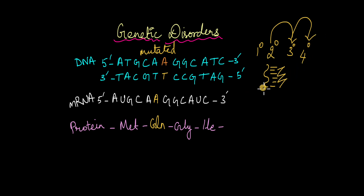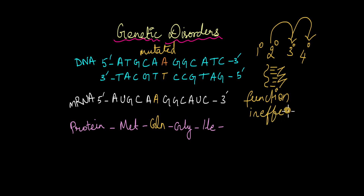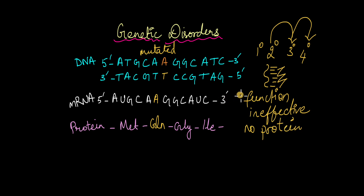If the structure of the protein is affected, it means that the function is ultimately affected. Some mutations can also cause protein translation to stop prematurely, which means that an ineffective protein is being produced — the protein is not fully long enough to function properly. Sometimes no protein can be produced because of such mutations. And ultimately proteins are the substances that cause the entire body to function properly, so if you have an ineffective protein, no protein, or a protein that is not folded properly, the body's functions are going to get affected.